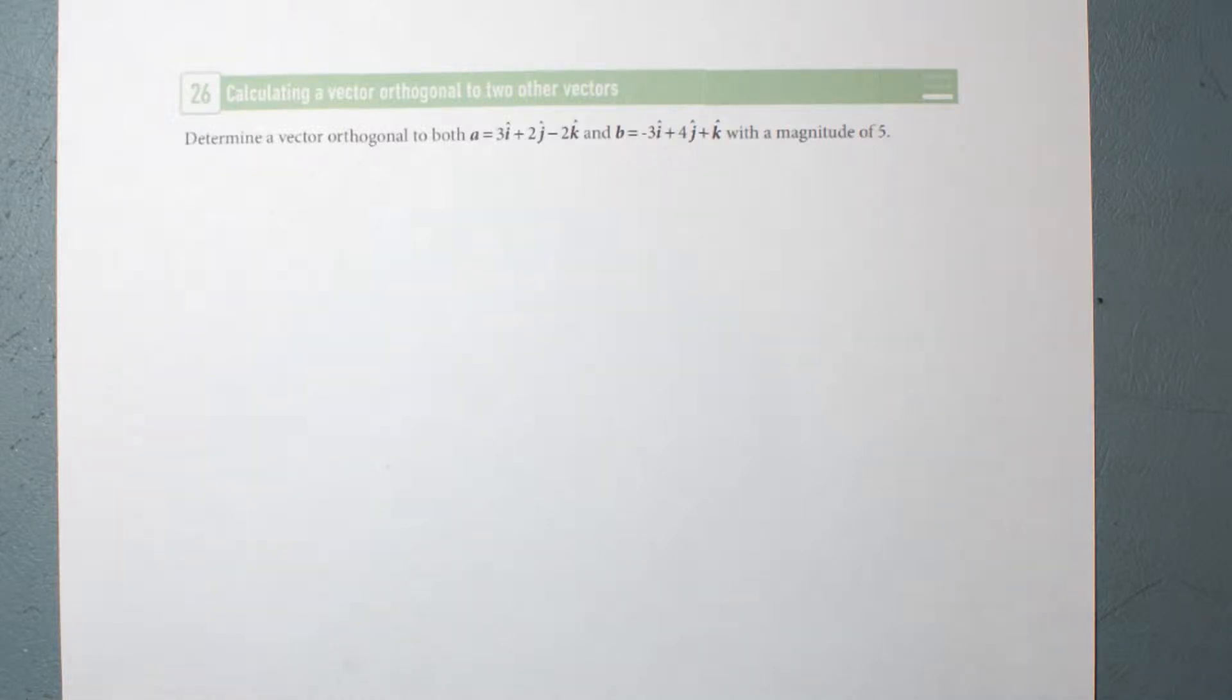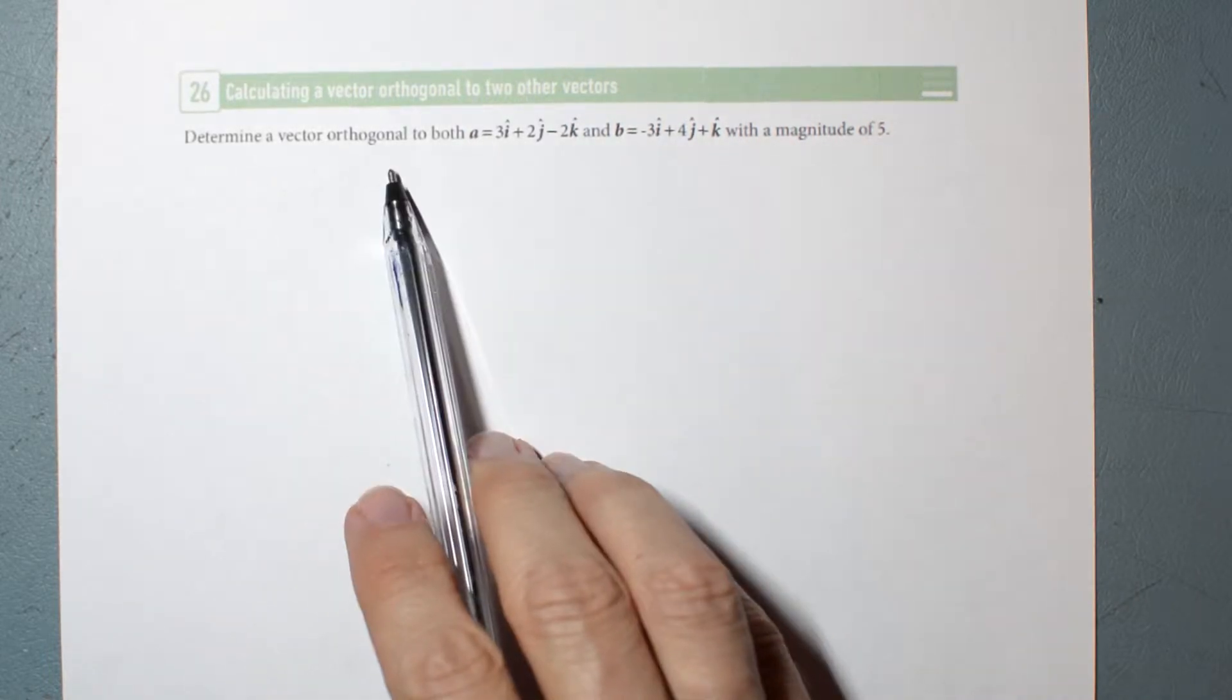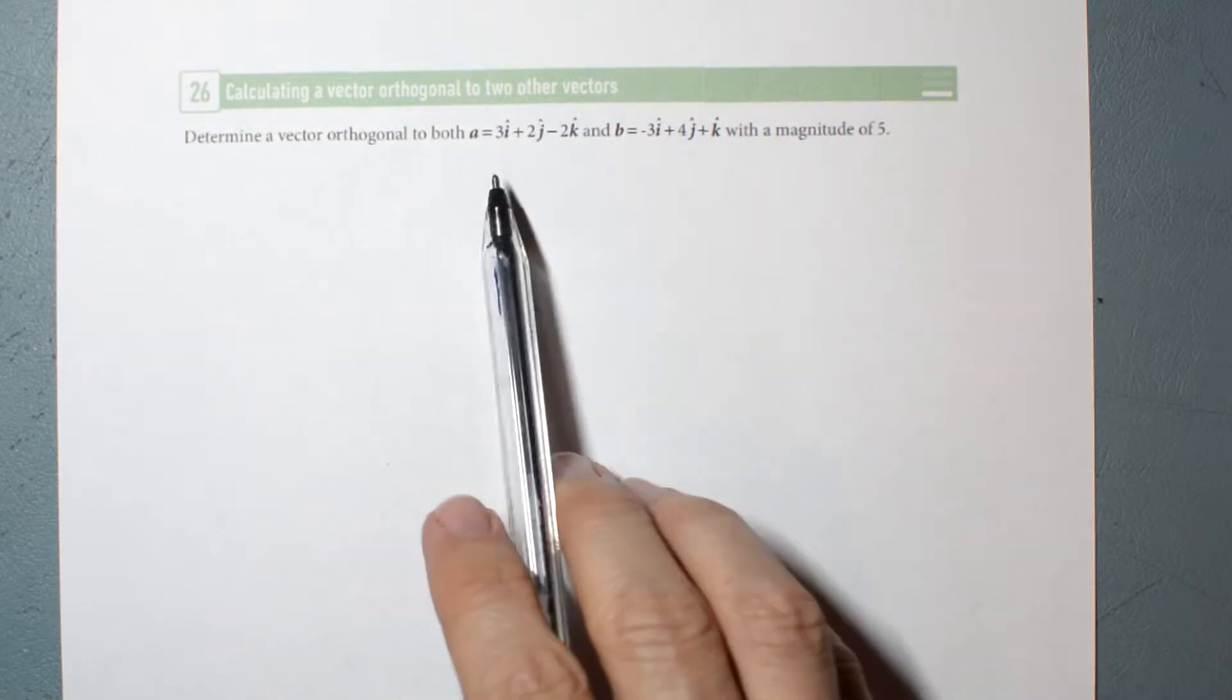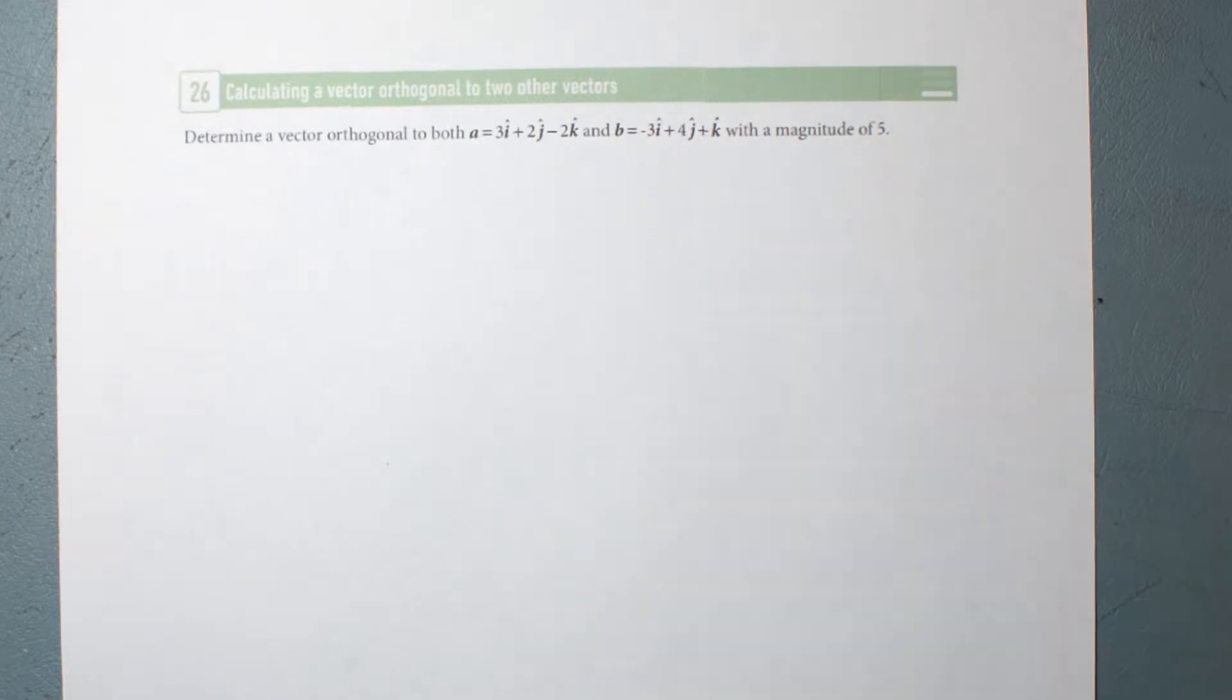We can use the same method to answer a question like this. Determine a vector orthogonal, meaning perpendicular, to both of these two vectors and with a magnitude of 5. How am I going to do that?